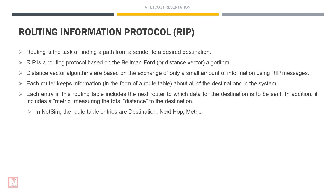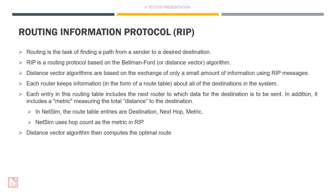In NetSim, the route table entries are destination, next hop, and metric. NetSim uses hop count as the metric in RIP. The distance vector algorithm then computes the optimal route. A lower hop count implies a more optimal, better, path.